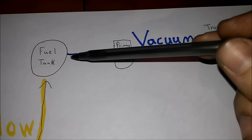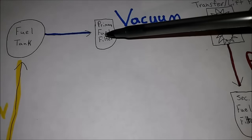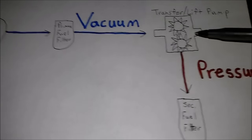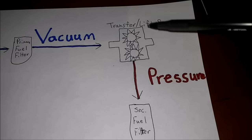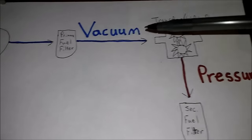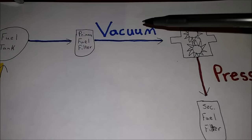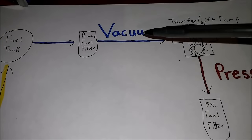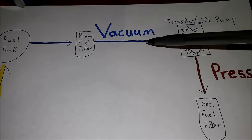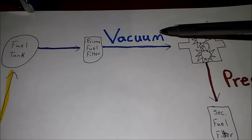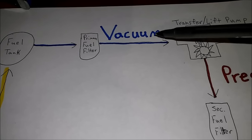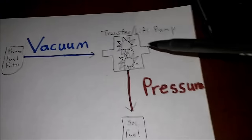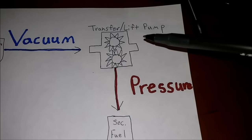We're going to start at your fuel tank — not much to tell you about that. Then it travels to your primary fuel filter, and from there it's going to travel to your fuel transfer pump. Now, everything between the fuel tank and the fuel transfer pump, sometimes called a lift pump, is a vacuum — it is not under pressure. So if you have a cut in the line or something's leaking, it's not going to leak fuel out. What it's actually going to do is suck air into the line, which is going to cause air to get in your fuel — and you want just pure fuel.